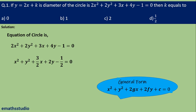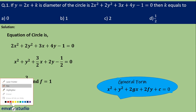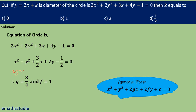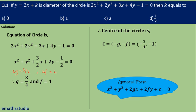This equation can now be compared with the general form. The reason for dividing by 2 is so that we can compare it with the general form. After comparing, the value of 2g is 3 upon 2, so g equals 3 upon 4, and the value of 2f is 2, so f equals 1. From this, the center of the circle is minus 3 by 4 comma minus 1, since the center is minus g comma minus f.